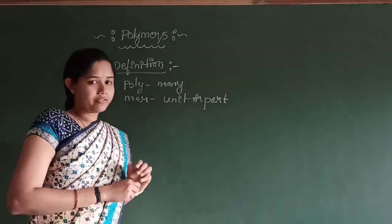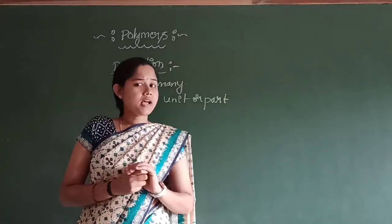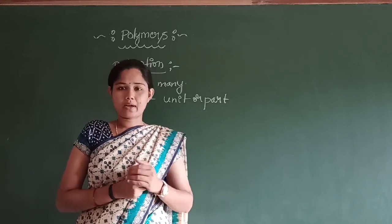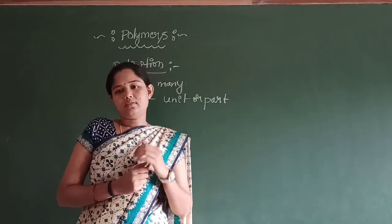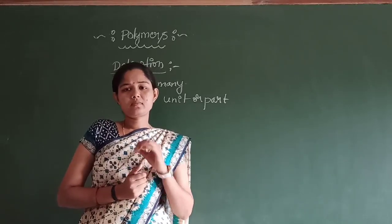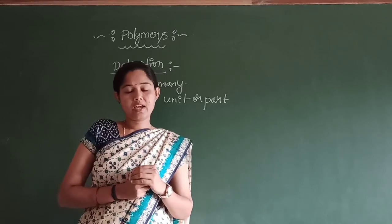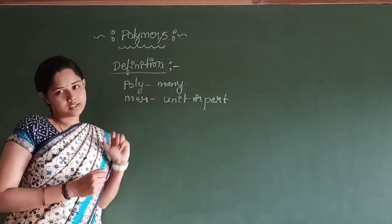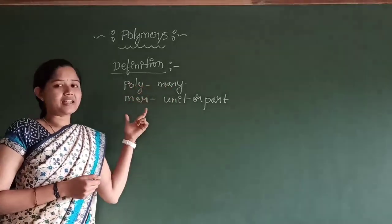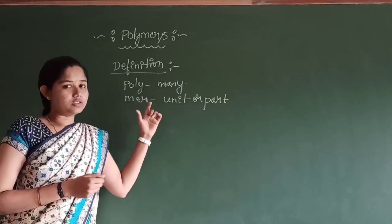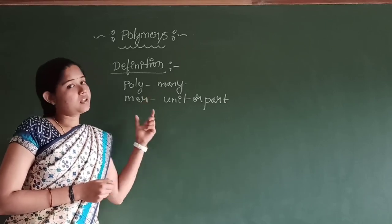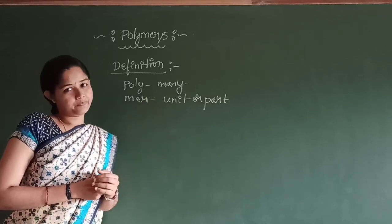So polymers are made up of so many units or parts. Thus we can define polymers as: polymers are complex and giant molecules known as macromolecules. They are obtained by linking many units together.